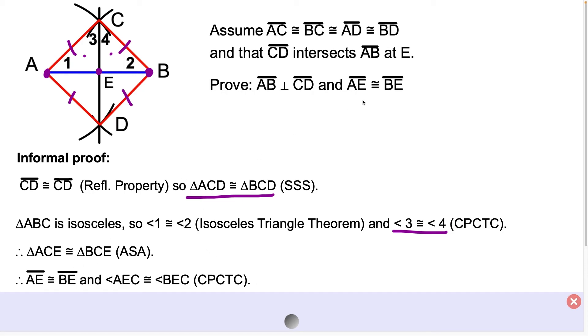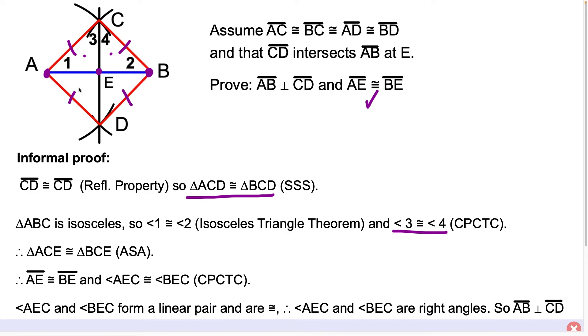But notice we established one piece of what we were trying to prove, so now we just have to finish this out. So moving on to the last section here, what we could say now is that since angle AEC and BEC form a linear pair and they're congruent, we said that here.